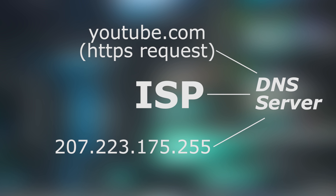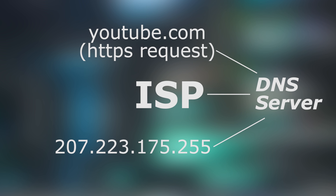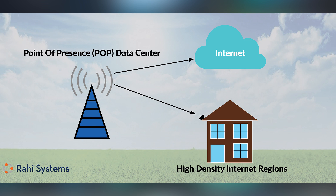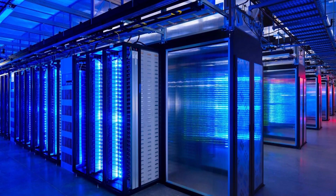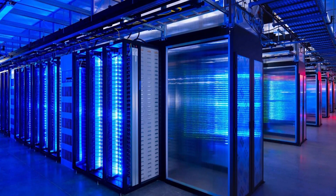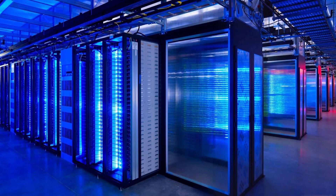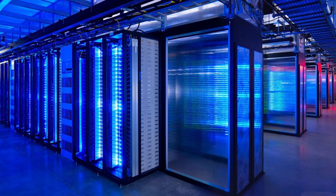Once the IP address is found, the ISP routes your request to a point of presence. From there, the request reaches a network access point, which connects to a public exchange, allowing communication between different ISP networks.